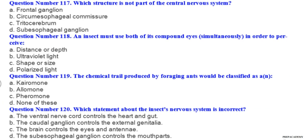Question number 117. Which structure is not part of the central nervous system? A frontal ganglion, B circumesophageal commissure, C tritocerebrum, D subesophageal ganglion. Question number 118. An insect must use both of its compound eyes simultaneously in order to perceive: A distance or depth, B ultraviolet light, C shape or size, D polarized light.